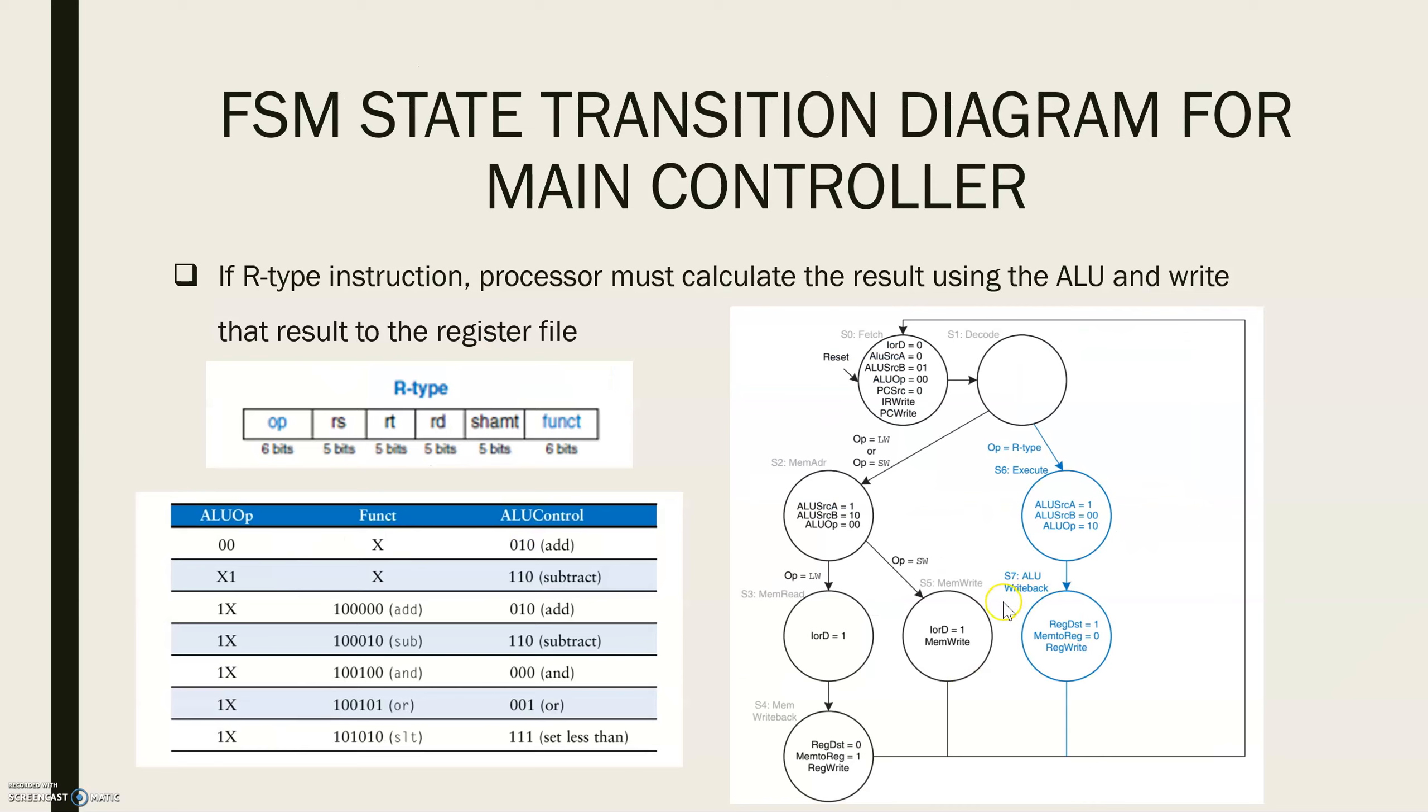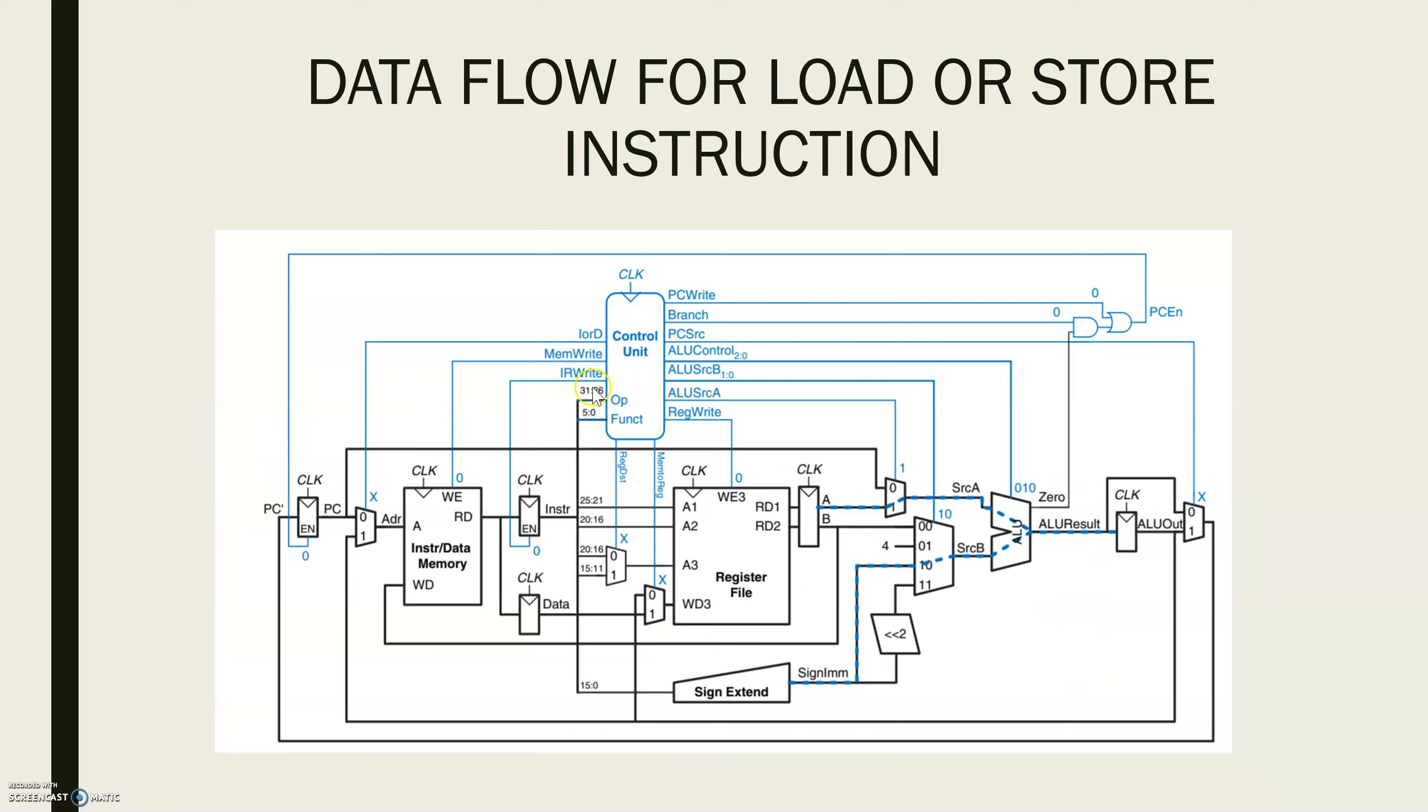In S7, ALU OUT is returned to the register file. So REG DSD is 1 because the destination is specified in the R-D field of the instruction. That is bits 11 to 15.